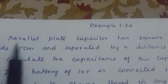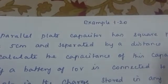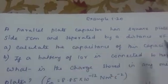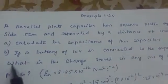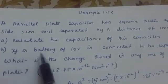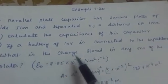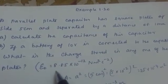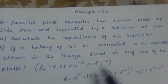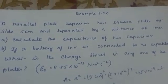Example 1.20: A parallel plate capacitor has square plates of side 5 cm and separated by a distance of 1 mm. Calculate the capacitance of the capacitor. Part B: If a battery of 10 volt is connected to the capacitor, what is the charge stored in any one of the plates? Epsilon 0 is equal to 8.85 into 10 raised to minus 12 newton meter square per coulomb raised to minus 2.